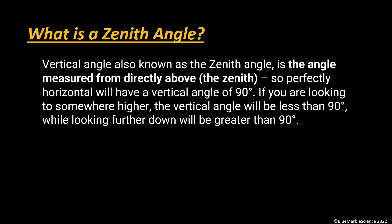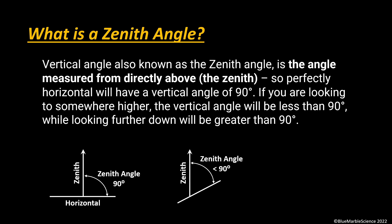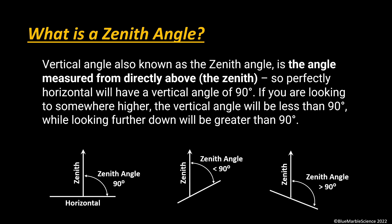What is a zenith angle? Vertical angle, also known as zenith angle, is the angle measured from directly above — the zenith. So perfectly horizontal will have a vertical angle of 90 degrees. If you're looking to a somewhat higher elevation, the vertical angle will be less than 90 degrees. And if you're looking further down, it will be greater than 90 degrees.